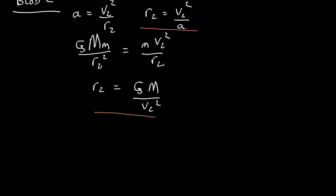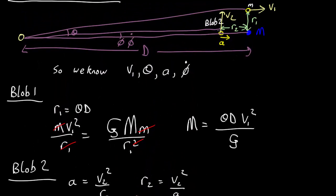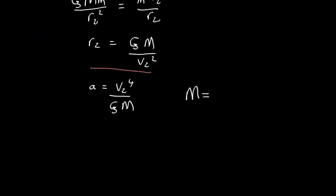So let's set those two equations equal to each other, and we get an expression for the acceleration: a equals v2 to the fourth over G M. And now with r2 cancelled out, we rearrange that to get M, and we get M equals v2. Now v2 is just phi dot times the distance, small angle approximation again, so that's going to be phi dot d to the fourth over G a. So it's the second equation for the mass; we have the first equation up here.